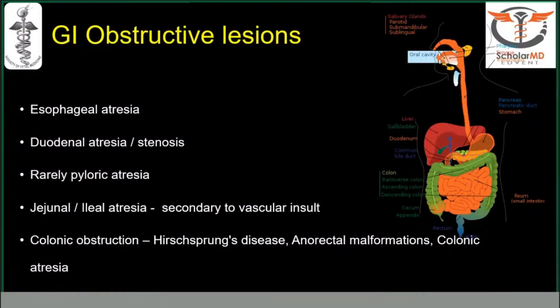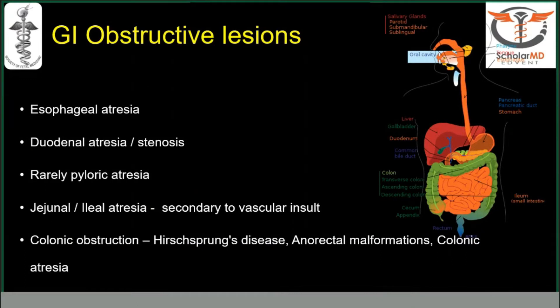The obstructive lesions we are talking about, depending on the level, include esophageal atresia, duodenal atresia and stenosis, pyloric atresia, jejunal and ileal atresia secondary to vascular insult, and colonic obstructions — Hirschsprung disease, anorectal malformations, and colonic atresia.